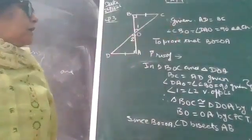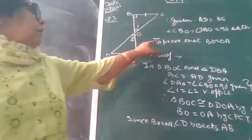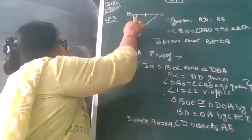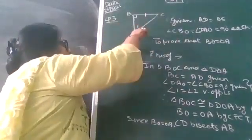And we have to prove that BO is equal to OA, this side is equal to this side.